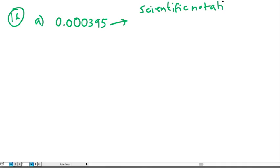Question 16 is asking us about scientific notation. There's a few parts to this. The first one tells us to convert 0.000395, which is in standard form, to scientific notation.